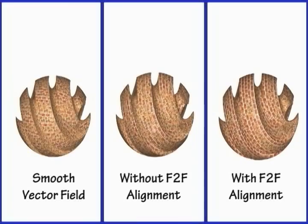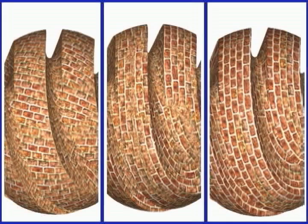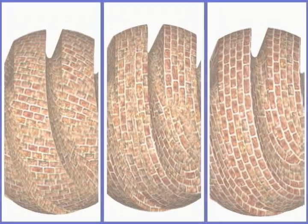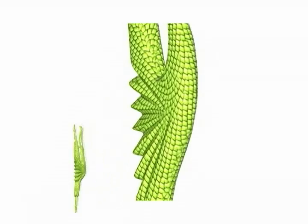Here is another result to show the difference between with and without exact feature-to-feature alignment. For your viewing pleasure, we now show a gallery of results using feature-aligned shape texturing, shown as the last image in each sequence.